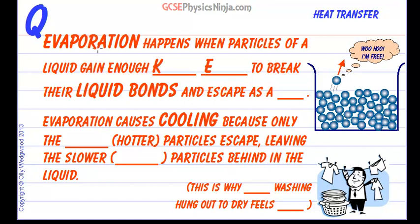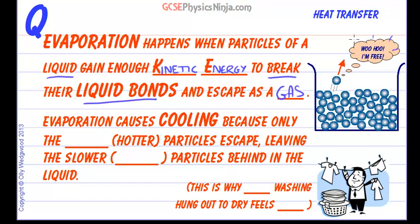So let's take a look at this flash card and see what the words are. Evaporation happens when particles of a liquid gain enough kinetic energy — i.e. they've absorbed a lot of heat energy and are moving very quickly — to break their liquid bonds and escape as a gas. Evaporation therefore causes cooling because only the faster or hotter particles escape, leaving the slower, cooler particles behind in the liquid.